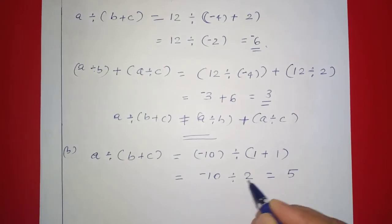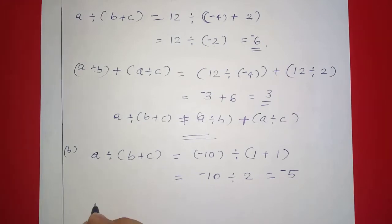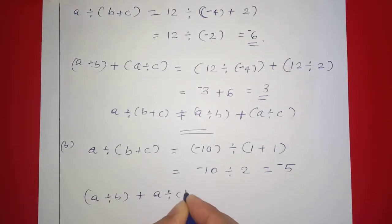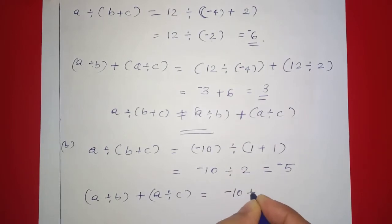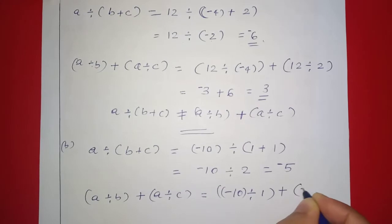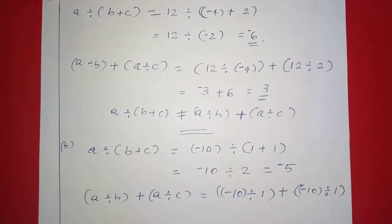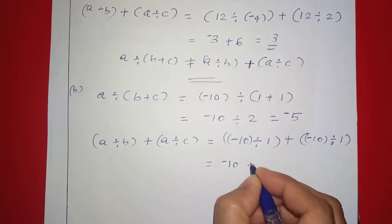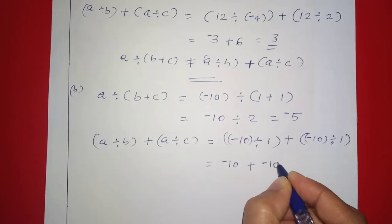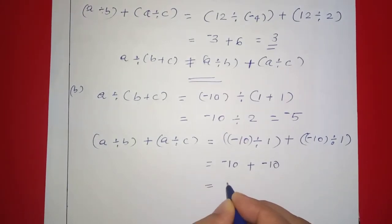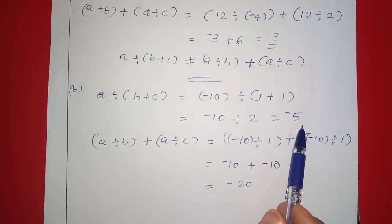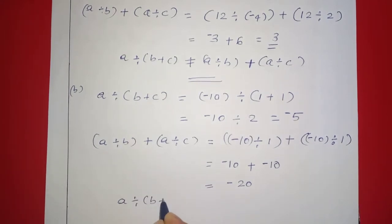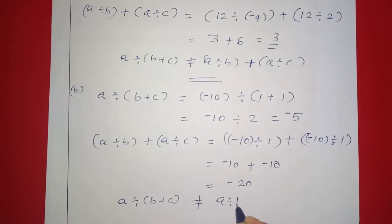That is equal to negative 10 division 2, which equals negative 5. That is the left hand side. Right hand side: a division b plus a division c equals negative 10 division 1 plus negative 10 division 1. That is negative 10 plus negative 10, which equals negative 20. Left hand side is negative 5 and right hand side is negative 20, so a÷(b+c) is not equal to a÷b + a÷c.